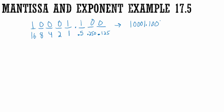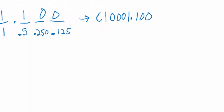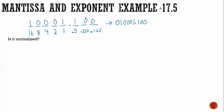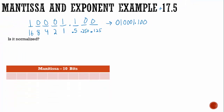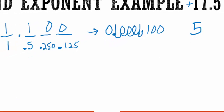When going to the mantissa and exponent, I need to make sure it's in two's complement. Because this is a positive 17, I know the leading number must be a zero — if I had a leading one, it would be a negative number. We have 10 bits for the mantissa and six bits for the exponent. It's not normalized yet and not even in the right spot — we see two ones together. I need to move the decimal one, two, three, four, five spots, so I'll write five down to remember that.